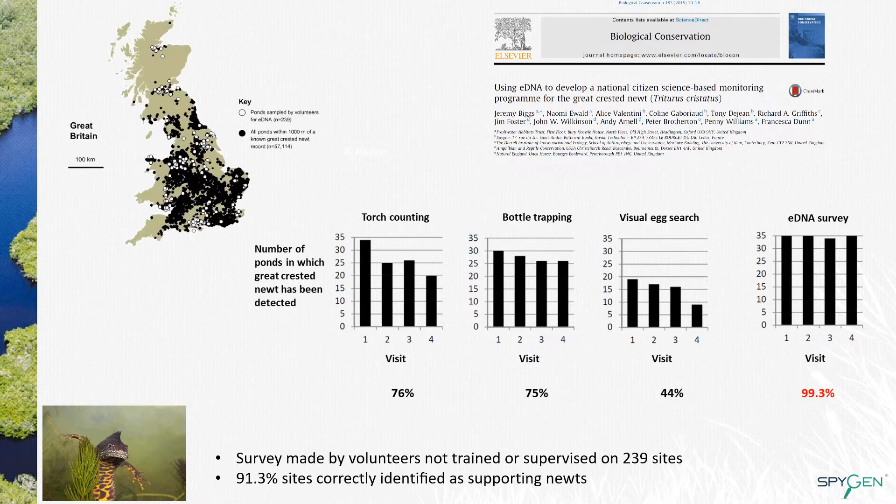Even more, on 239 sites around the country, an eDNA survey was made by volunteers who were not trained or supervised. 91% of the sites were correctly identified as supporting newts, and this result did not differ whether the eDNA survey was made by volunteers or a trained ecologist, opening the possibility to use eDNA for citizen science.